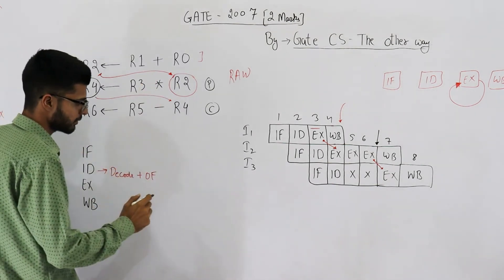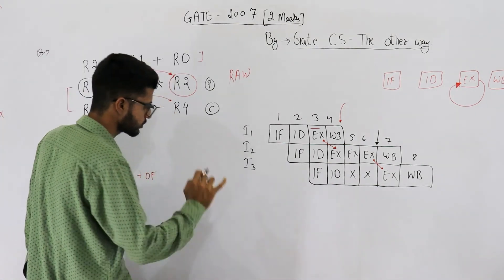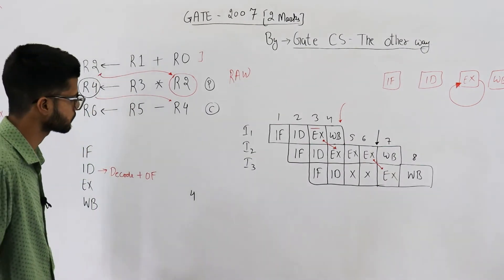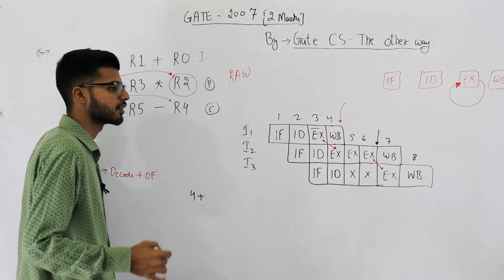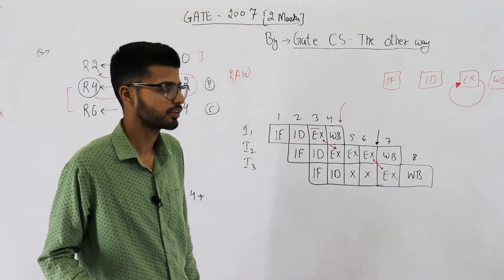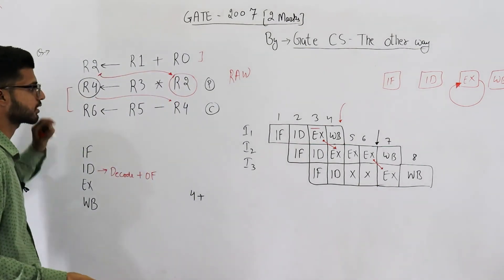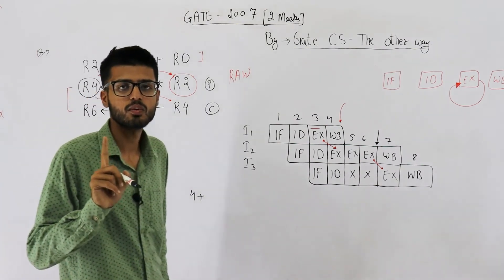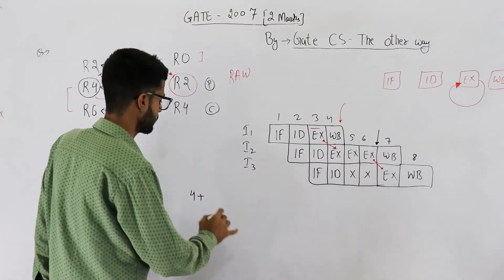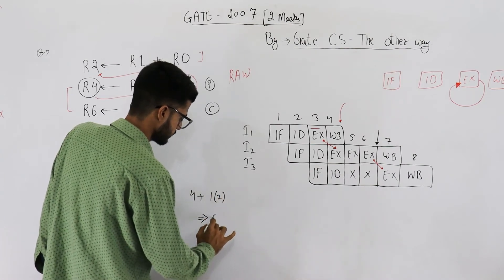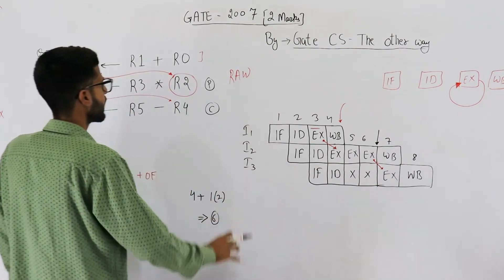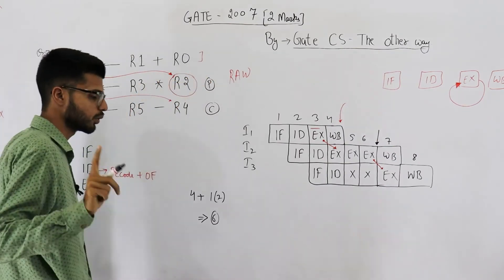This is a 4 stage pipeline, that means first instruction is going to use 4 cycles. Then remaining n minus 1 instructions, that means remaining 2 instructions, is going to take 1 clock cycle each. That means 1 into 2, so this is 6. That means had there been no dependencies, if we neglect these dependencies, in that case 6 clock cycles are required.